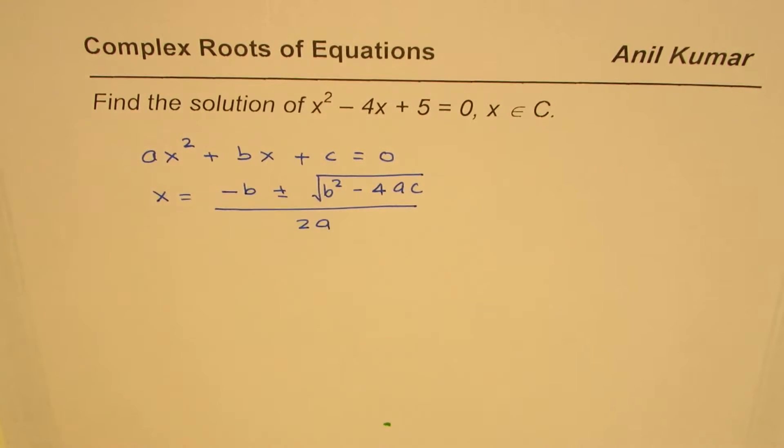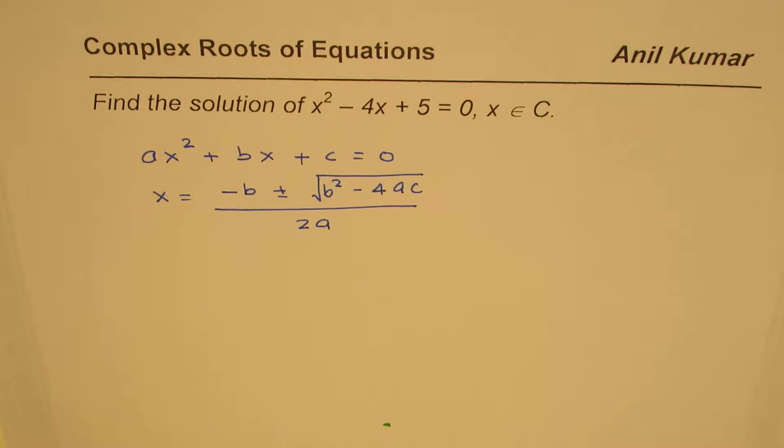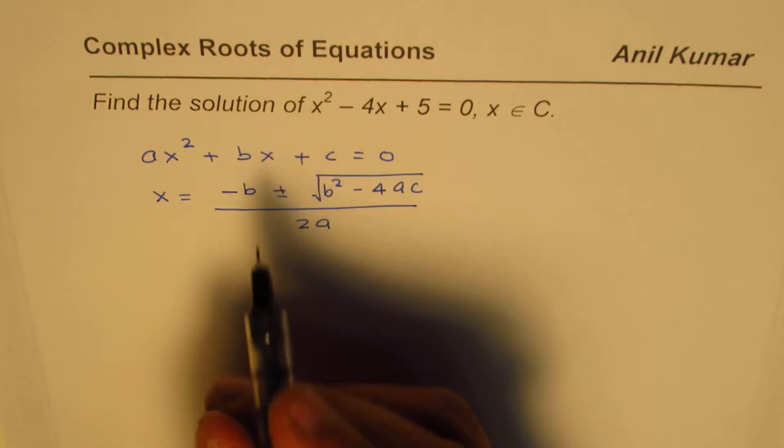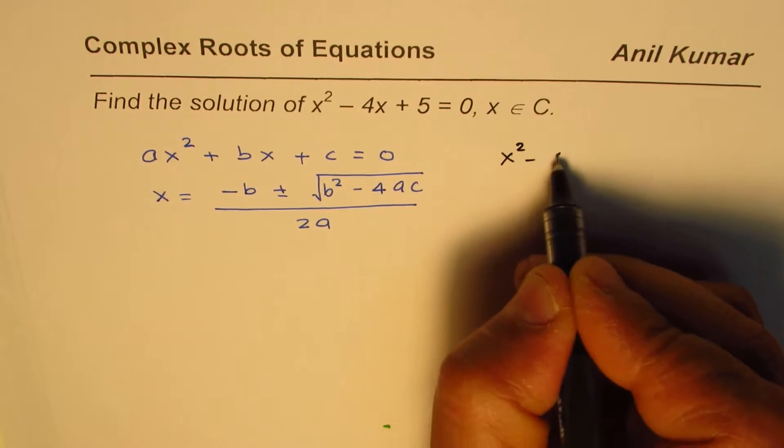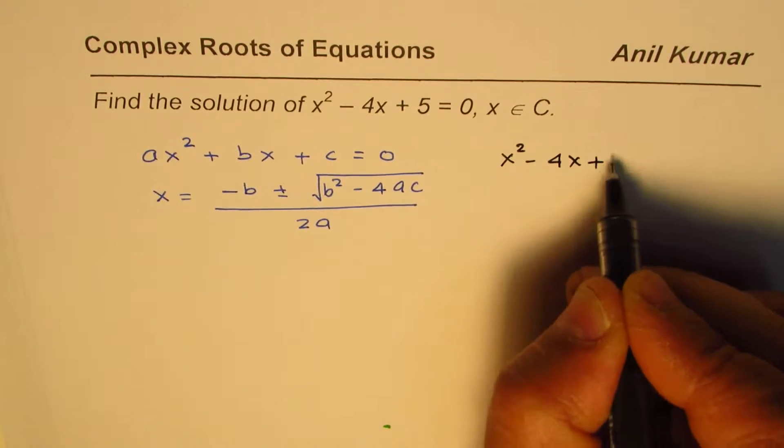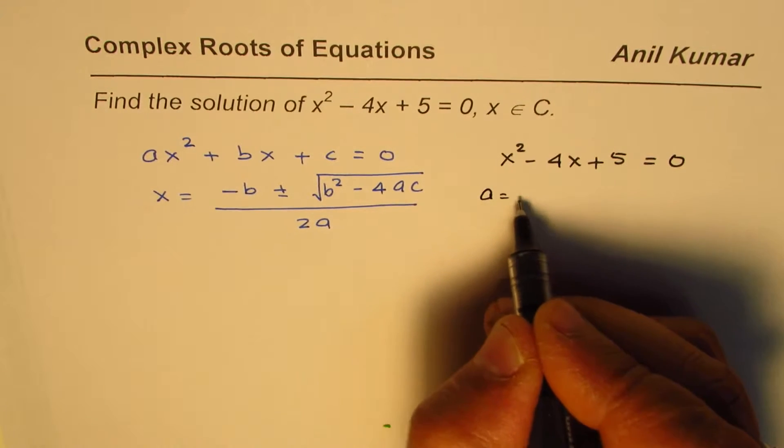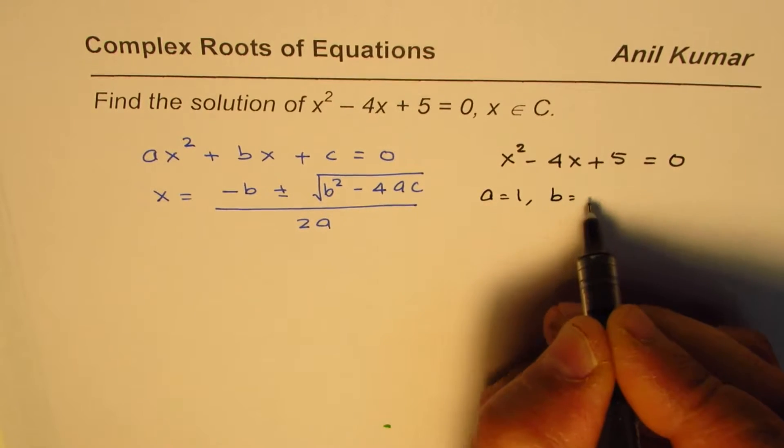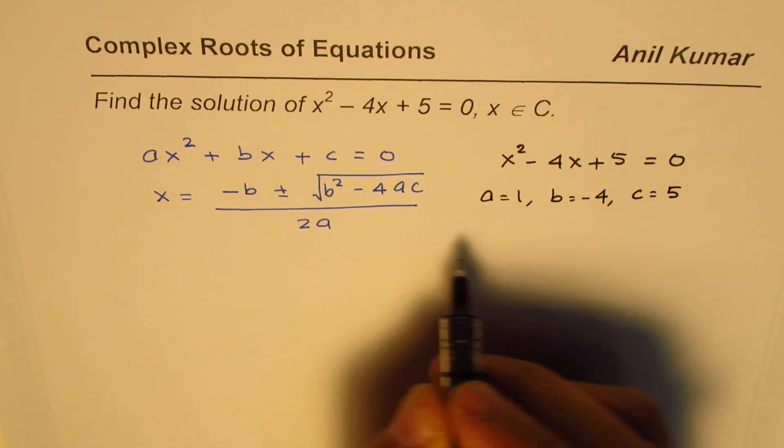Of x², x, and c is the constant. So we are going to apply this formula to solve our equation. What we are given here is x² - 4x + 5 = 0, so in our case a = 1, b = -4, and c = 5.